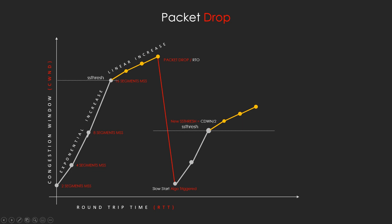The congestion window increases exponentially from 2 to 4 to 8 to 16 MSS as acknowledgements are received, until it reaches the ssthresh. From that point it enters the congestion avoidance phase. During packet transmission, if three duplicate ACKs, a packet drop, or a retransmission timeout (RTO) occurs, TCP assumes a drop and reduces the congestion window, restarting from 2 or 4 MSS.